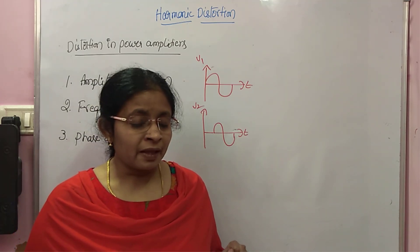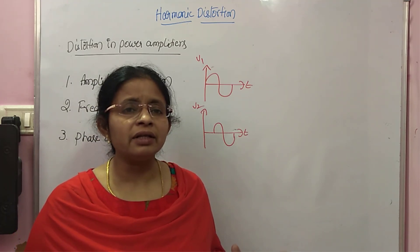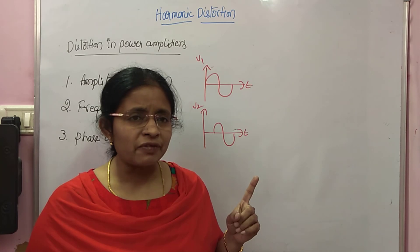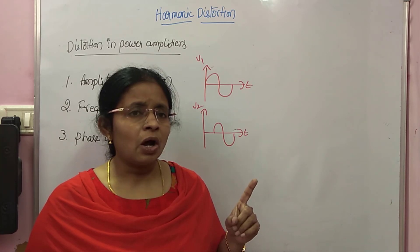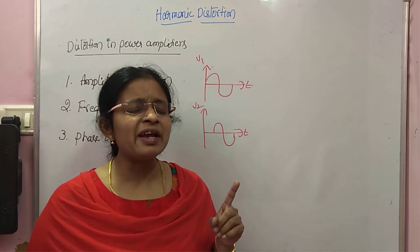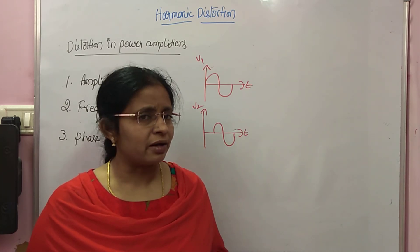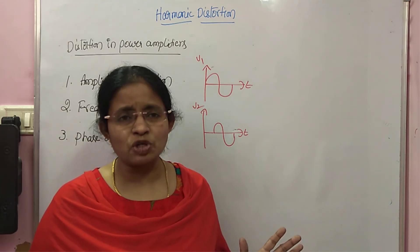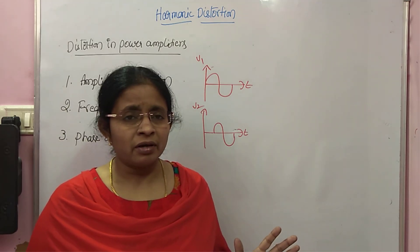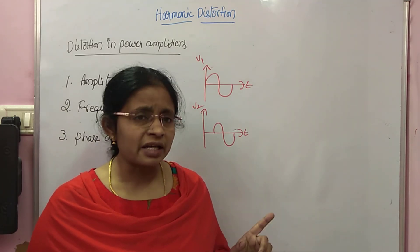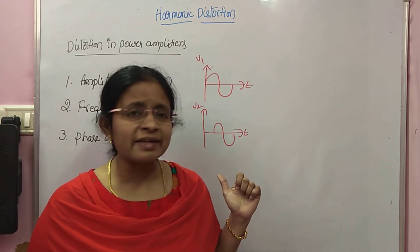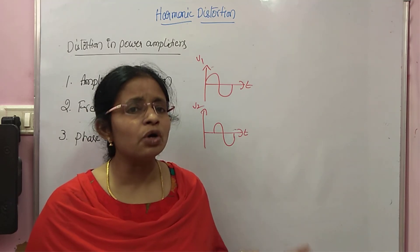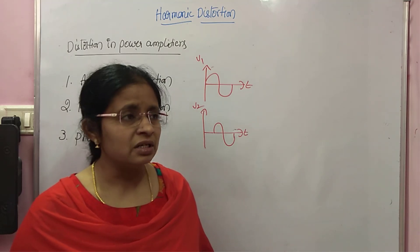The reason we can ignore phase distortion is that the output of a power amplifier always feeds a loudspeaker, and we are always listening from the loudspeaker. By listening, we can't detect the phase difference, so we can ignore it.